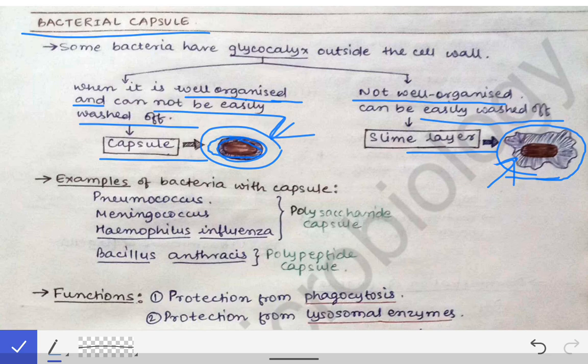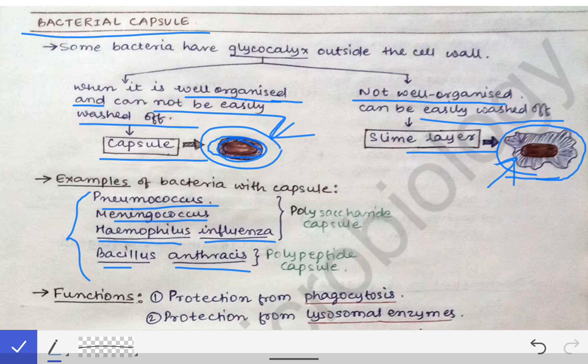Some examples of bacteria which possess the bacterial capsule are: Pneumococcus (Streptococcus pneumoniae), Meningococcus, Haemophilus influenzae, and Bacillus anthracis. These are some of the very important bacteria which possess the bacterial capsule.